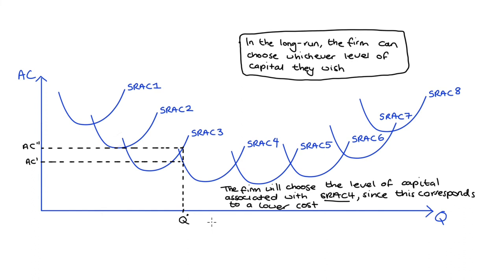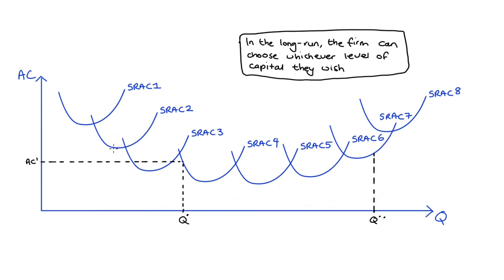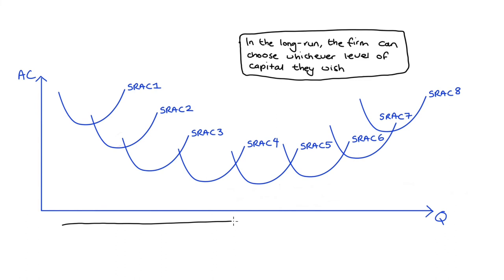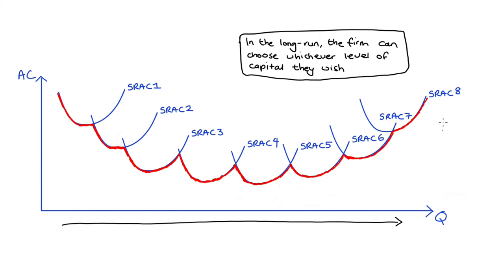We can think about other quantities as well. To produce Q**, the firm would choose the capital level corresponding to SRAC7; to produce Q***, they would choose SRAC2, and so on. If we think about all possible quantities the firm could produce, finding the average cost for each — and therefore the long-run average cost curve — we would essentially be tracing out the lowest part of all the possible short-run average cost curves. This is shown as the red line, and this is why people describe the long-run average cost curve as the lower envelope of the short-run average cost curves — it hugs them from the bottom.